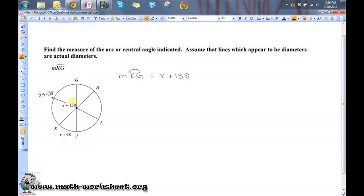So because this looks like a diameter and it does say we can assume that lines that appear like diameters are diameters, then that means that the sum of these two arcs here should add to 180 degrees.